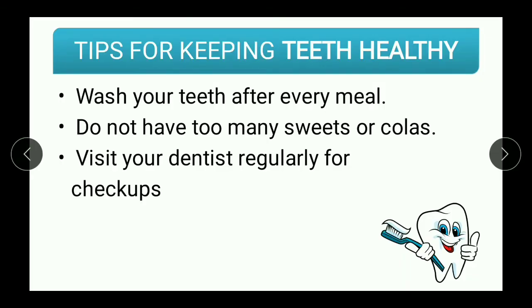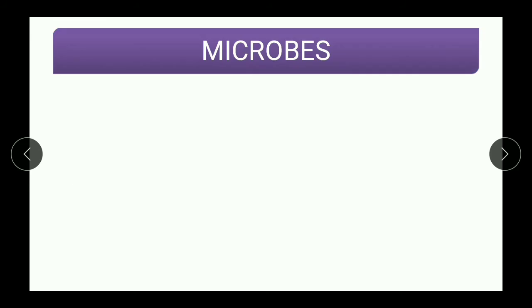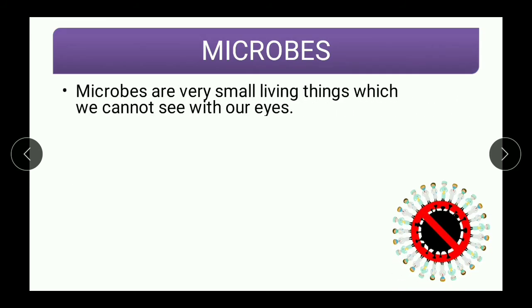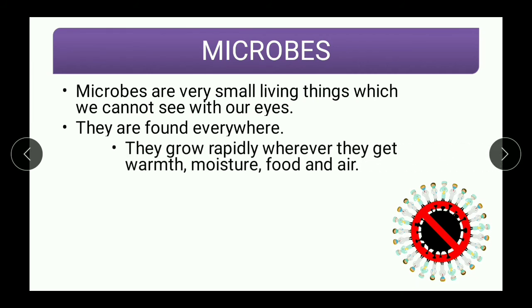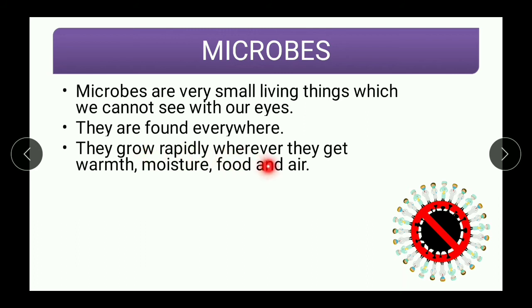Microbes are very small living things which we cannot see with our eyes — we have to use microscopes to observe them. They are found everywhere, inside our body as well as outside our body. They grow rapidly wherever they get these four things: warmth, moisture, food, and air.